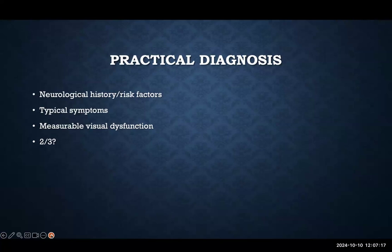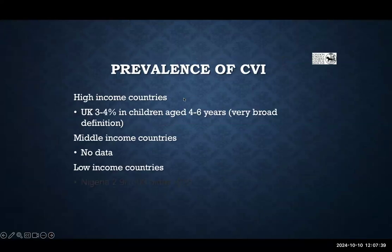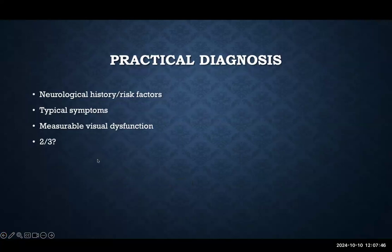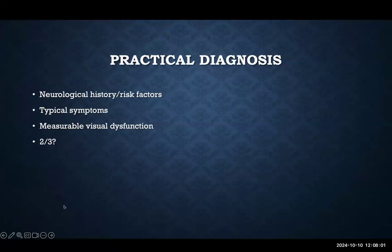We're talking about children who have poor vision but fairly normal-looking eyes — how do we make a diagnosis of CVI in a busy clinic? First, you're looking for a risk factor, a neurological history: maybe the child was very premature or had problems at birth requiring a long time in a special care baby unit. Second, have they got typical symptoms of visual problems in everyday life? Third, can we measure some problem with vision? These children may have neurodevelopmental delay and may be quite difficult to assess formally. I like to have two out of those three factors to make a diagnosis of CVI.